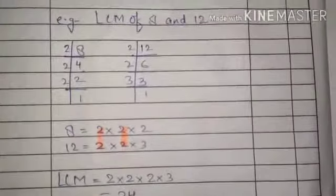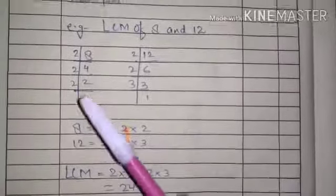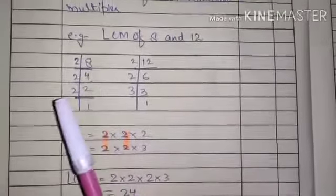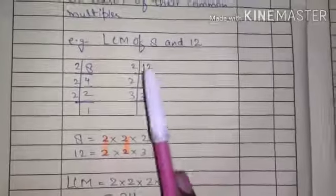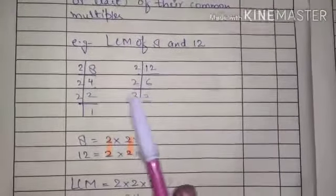We find out the LCM of 8 and 12. The first one is 8, 2, 2, 2, 4, 2, 1, 2. Then 2, 6, 12, 2, 3, 6, 3, 1, 3.